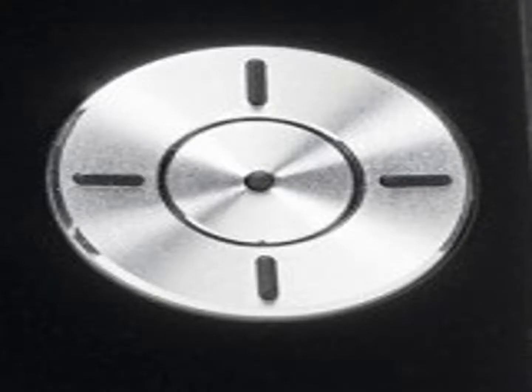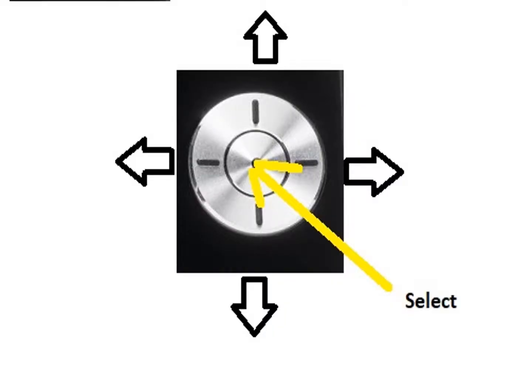This is the navigation key up close. The outside ring is left, right, up, and down, and the very center is select. This key comes into play when you're in different settings — I'll point it out when you need it. For example, if you go into your call history and need to scroll around, you use the navigation key to go up and down or left and right. The center bullseye is select, so you can highlight a name and hit center to call that person back.